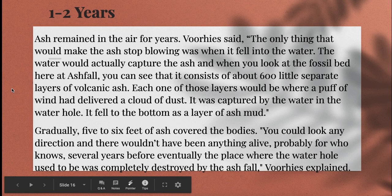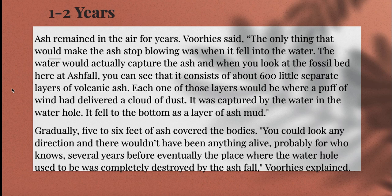One to two years. Ash remained in the air for years. The only thing that would make the ash stop blowing was when it fell into the water. The water would capture the ash, and when you look at the fossil bed here at Ashfall, you can see it consists of about 600 little separate layers of volcanic ash. Each one of those layers would be where a puff of wind had delivered a cloud of dust, captured by the water in the waterhole and falling to the bottom as a layer of ash mud. Gradually, five to six feet of ash covered the bodies. You could look in any direction and there wouldn't have been anything alive for several years, before eventually the waterhole was completely destroyed by the ash fall.